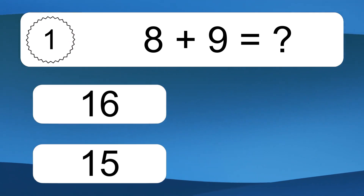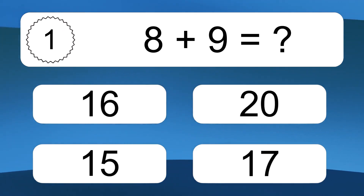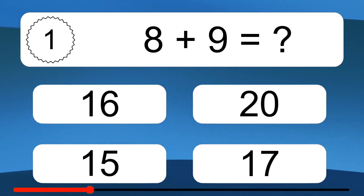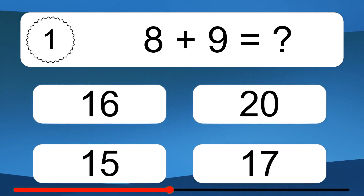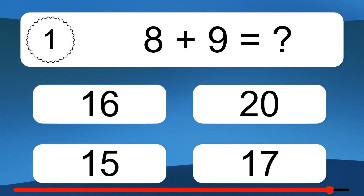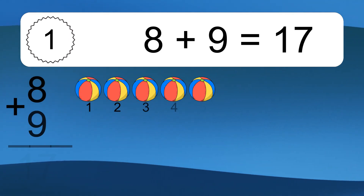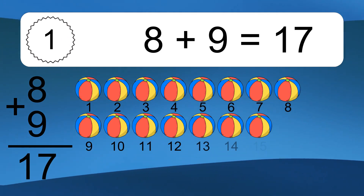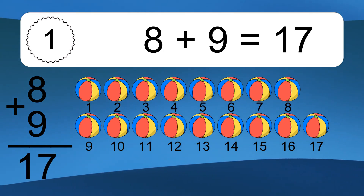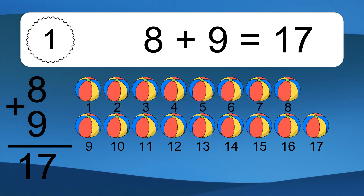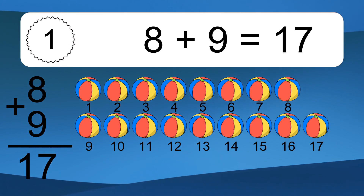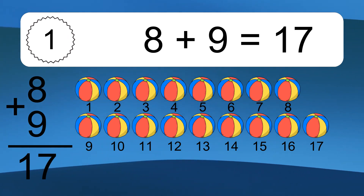8 plus 9 equals what? 8 plus 9 equals 17. Let's count it. 1, 2, 3, 4, 5, 6, 7, 8, 9, 10, 11, 12, 13, 14, 15, 16, 17.